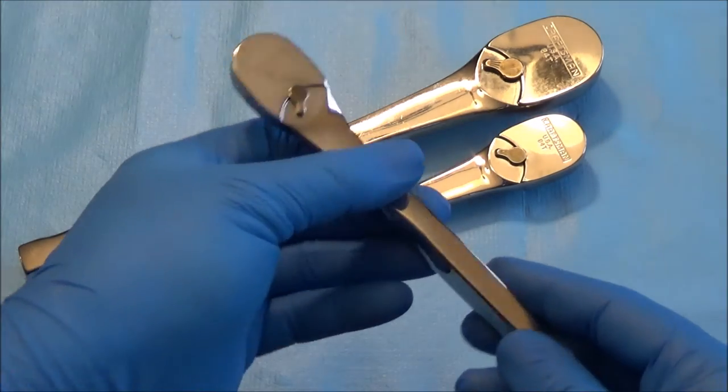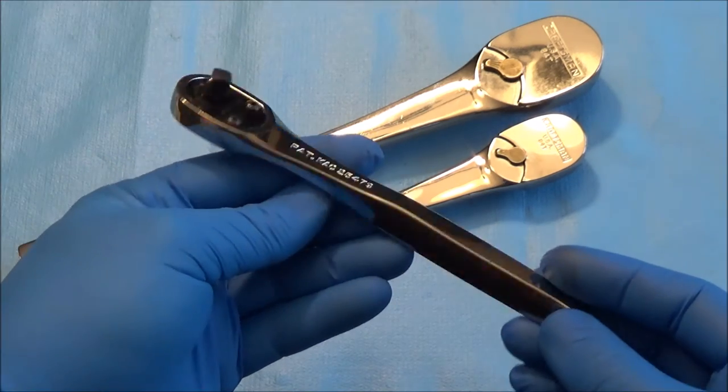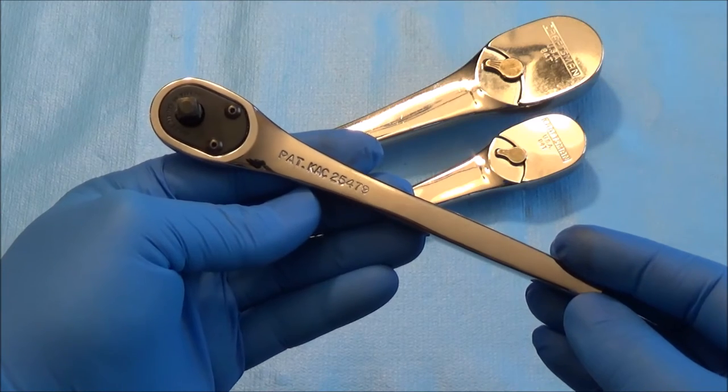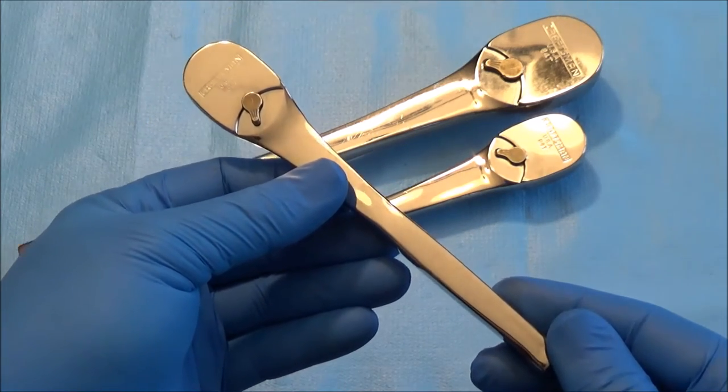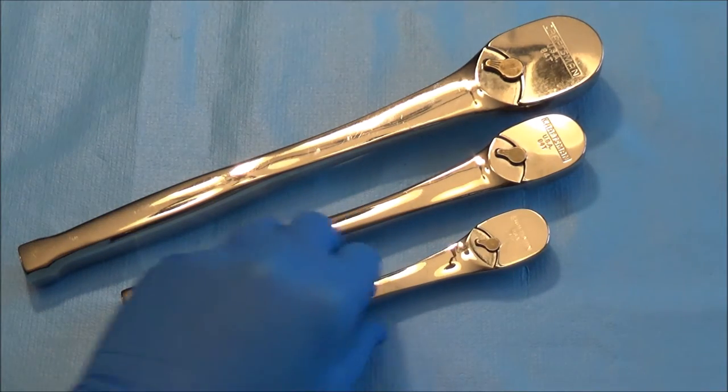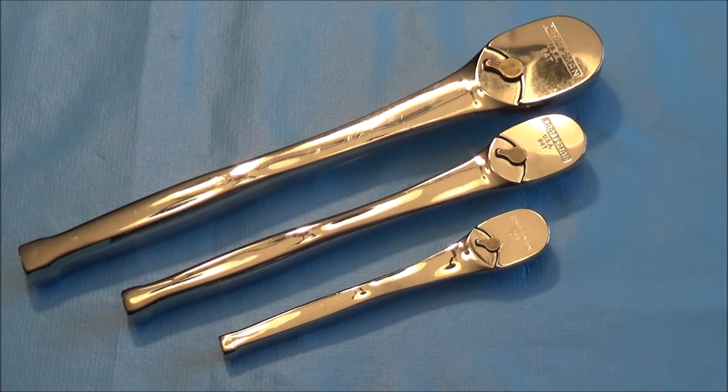Then we have the quarter inch serial number 25479. Why the 3/8 has one less digit I have no clue but they're all like that. I have a few sets of these so we're gonna keep this fairly light and informal. If you hear things in the background don't mind it.